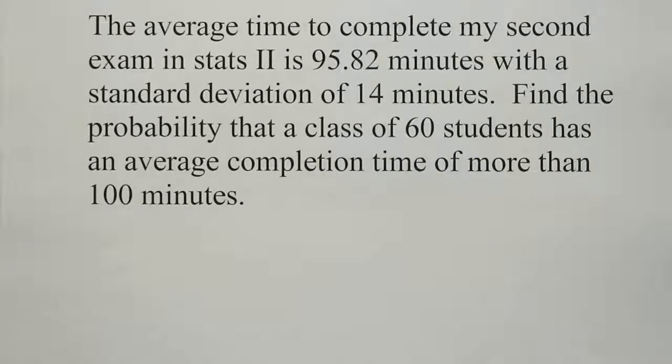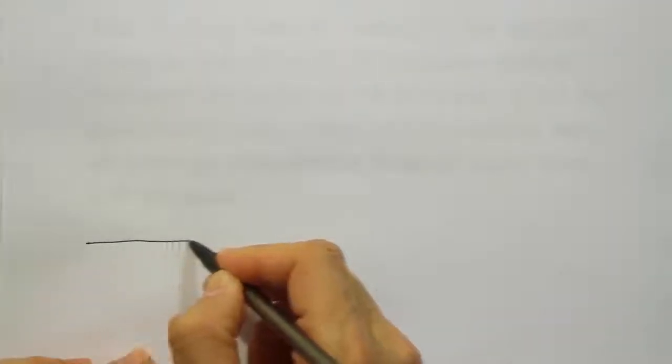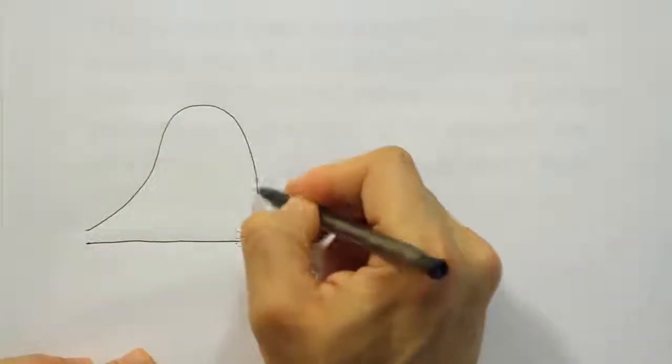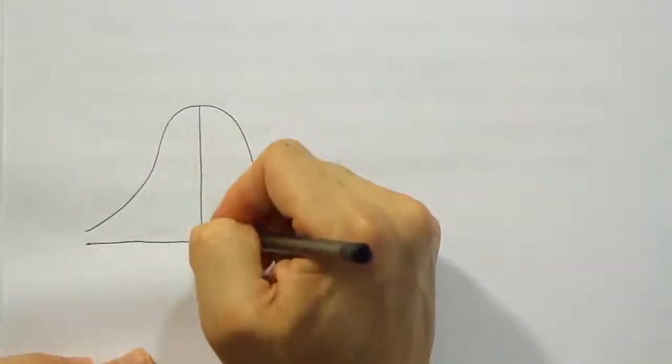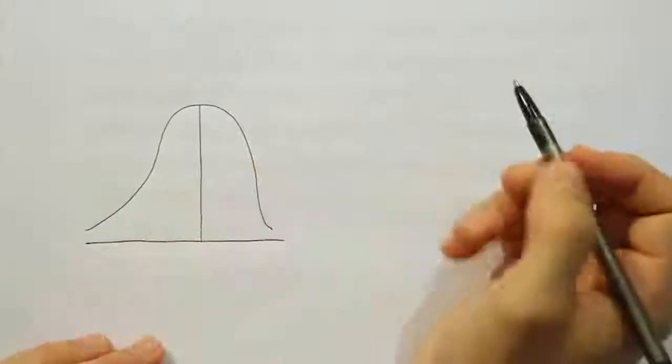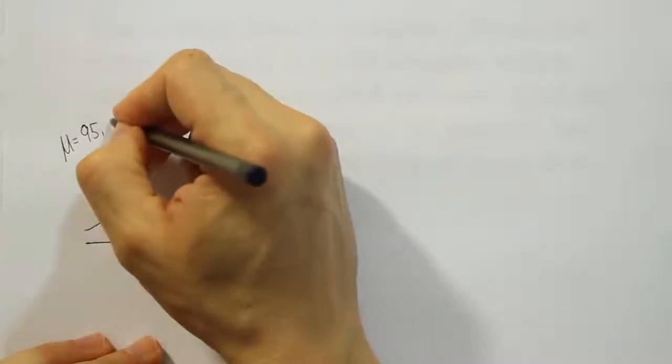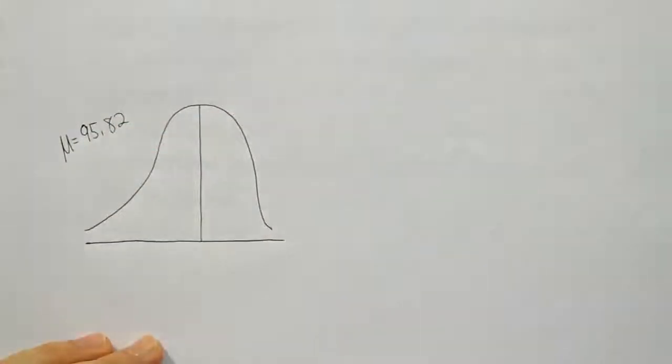Let's use the information they gave us, draw the bell curve, and then we'll use the graphing calculator to finish the problem up. So I'm going to draw my bell curve. They tell us that typically the mean for the completion time is 95.82 minutes. That's the mean they give us.